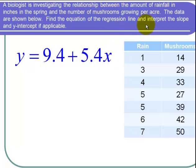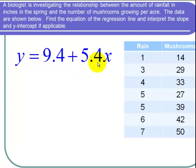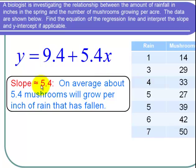Now I'm asked to interpret the slope and y-intercept. The slope is the number in front of X, which is 5.4. To interpret the slope, I say that on average, about 5.4 mushrooms will grow per inch of rain that has fallen.